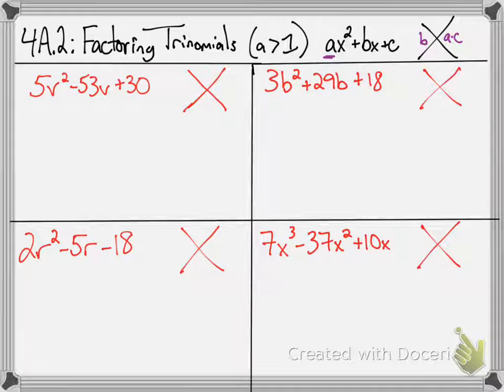So, what we're going to do here is fill in the diamond with the two values. So, again, the b value is that middle number, which is negative 53. The number on the right is the product of the a and the c values. So, the a value is 5. The c value is 30. 5 times 30 is 150. Now, what we're going to fill in, the top and the bottom numbers here, these are the two numbers that we're going to find that multiply to 150 and add to negative 53.